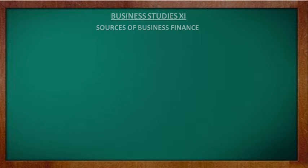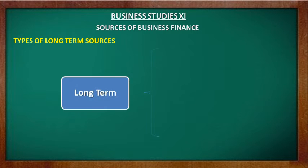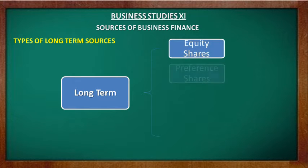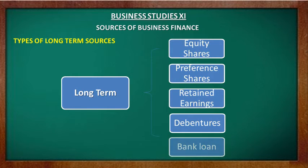Types of long-term sources of finance include equity shares, preference shares, retained earnings, debentures, and bank loans. Bank loans for a period of more than 5 years are considered long-term, though they may also be considered medium-term or short-term depending on the period.